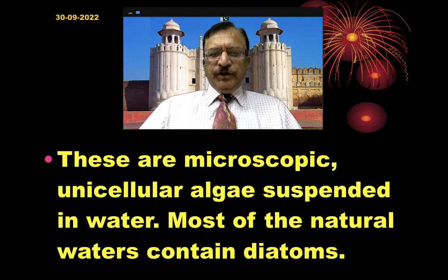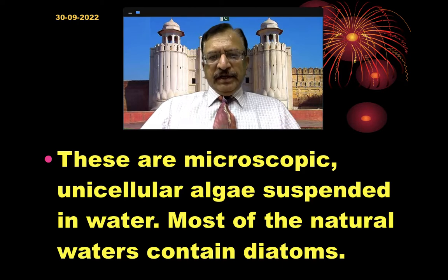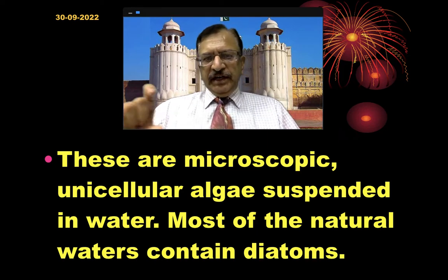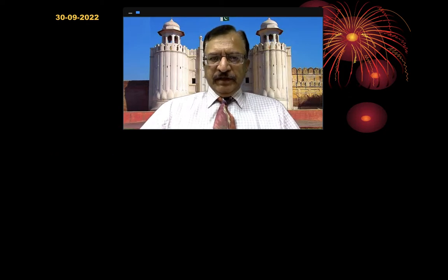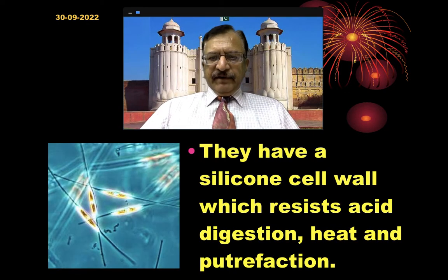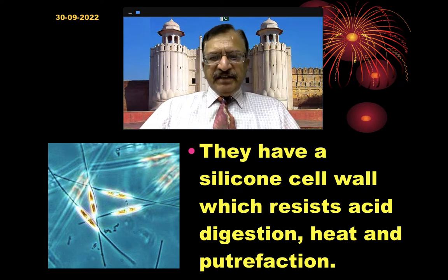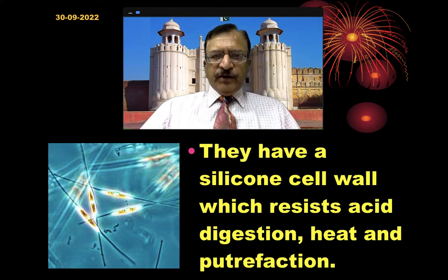Diatoms are basically microscopic unicellular algae suspended in water. Most natural water contains diatoms, including the routine water which we drink. They have a silicon cell wall which resists acid digestion, heat, and putrefaction. That is why diatoms can be detected and are significant in drowning.